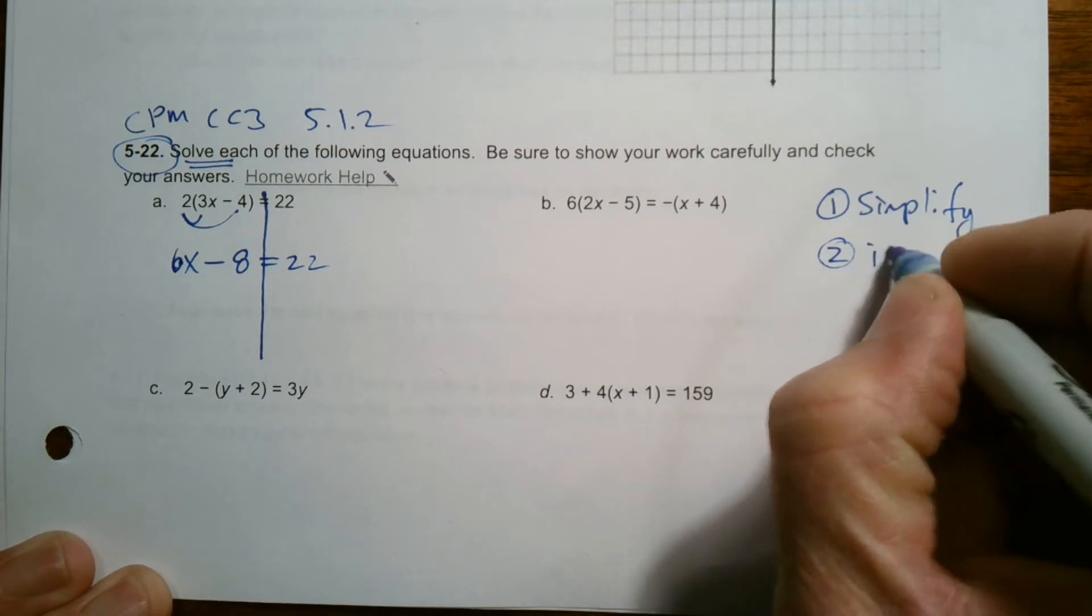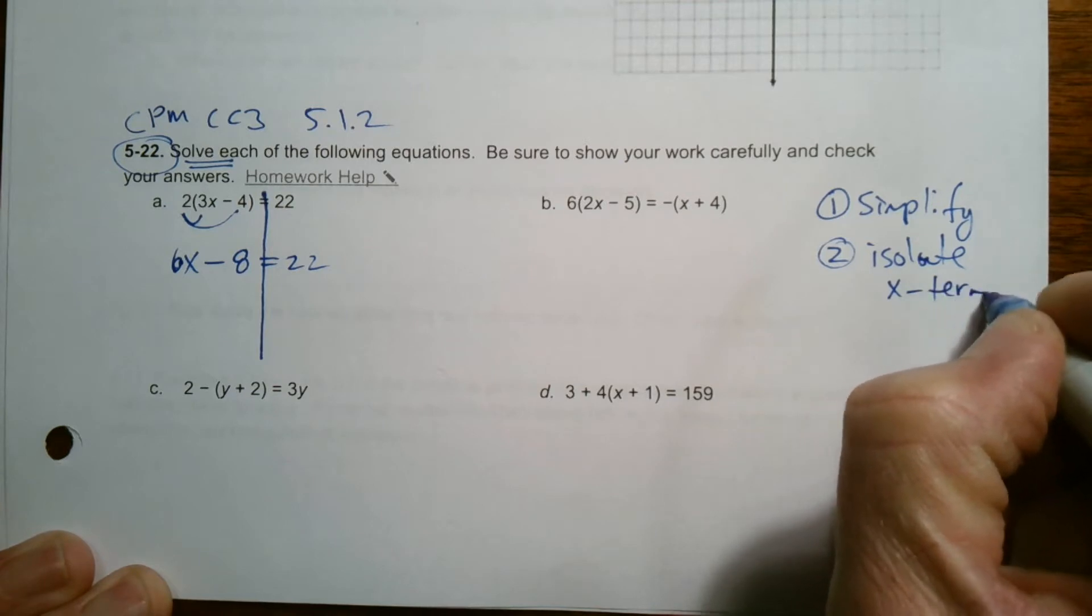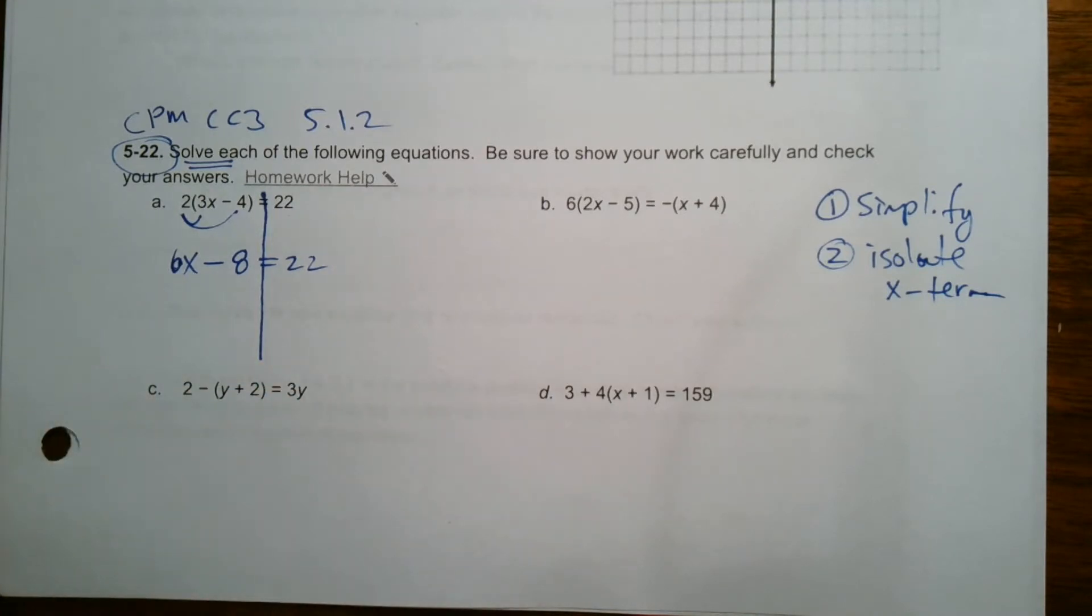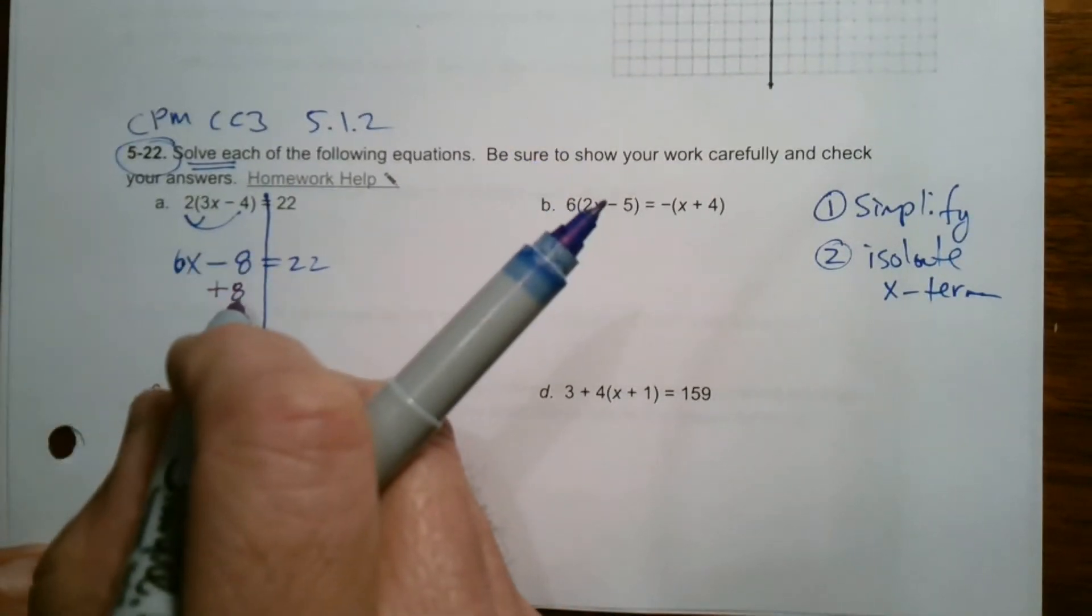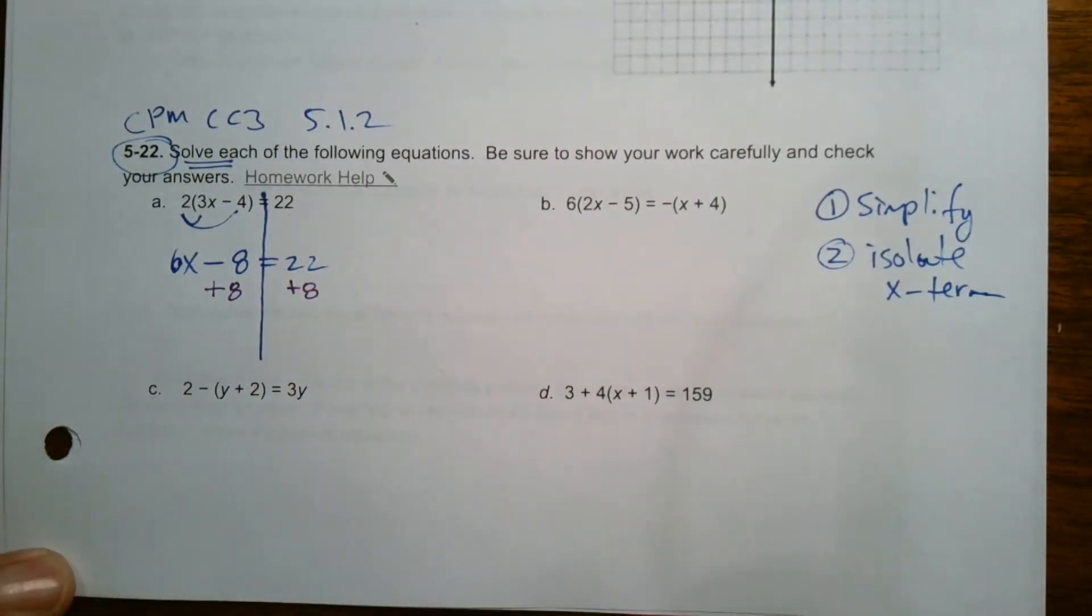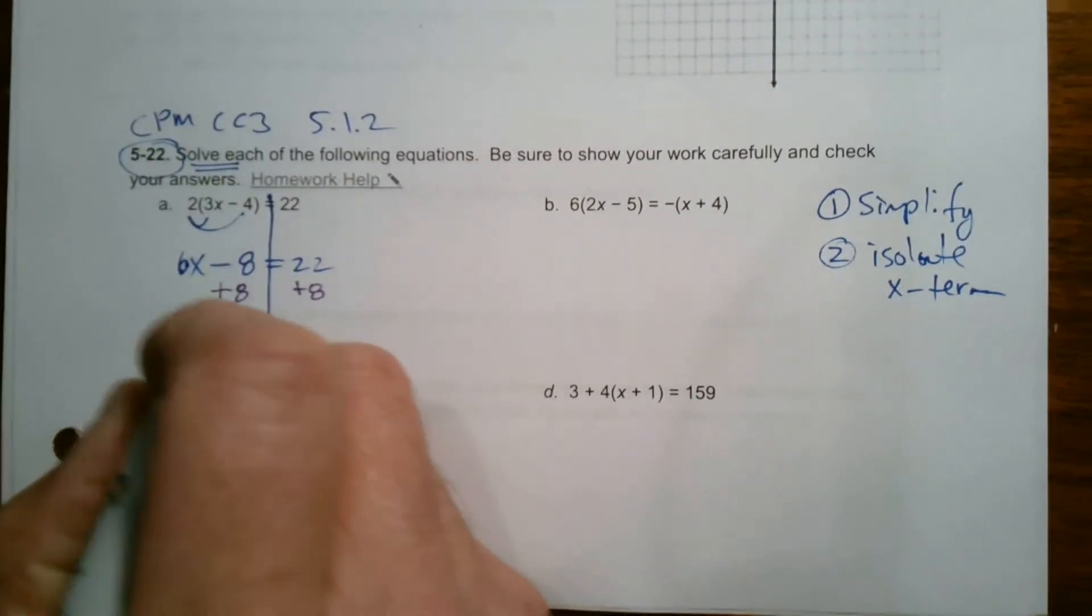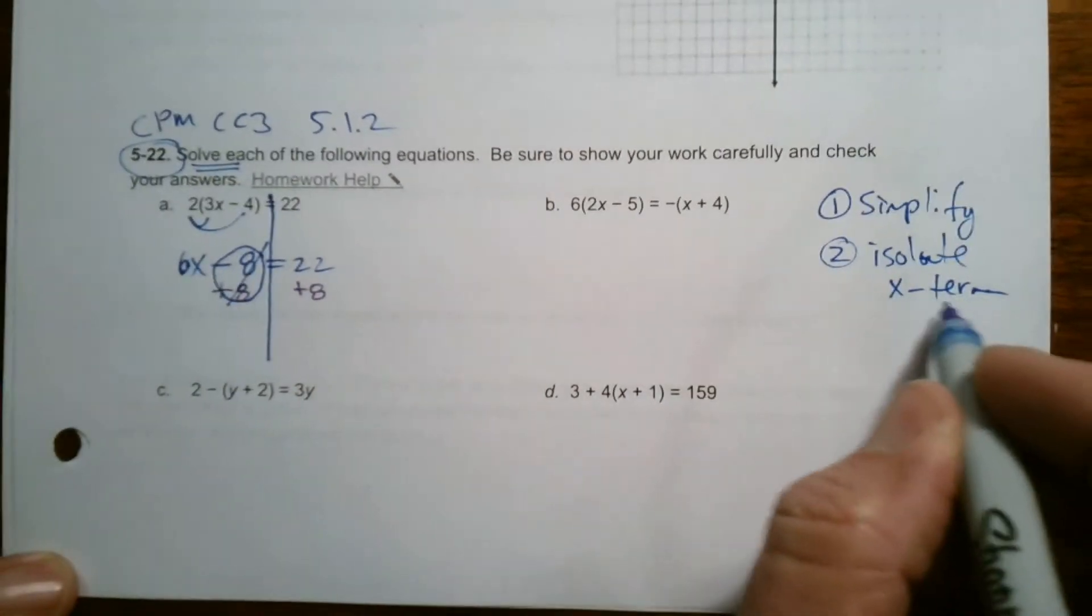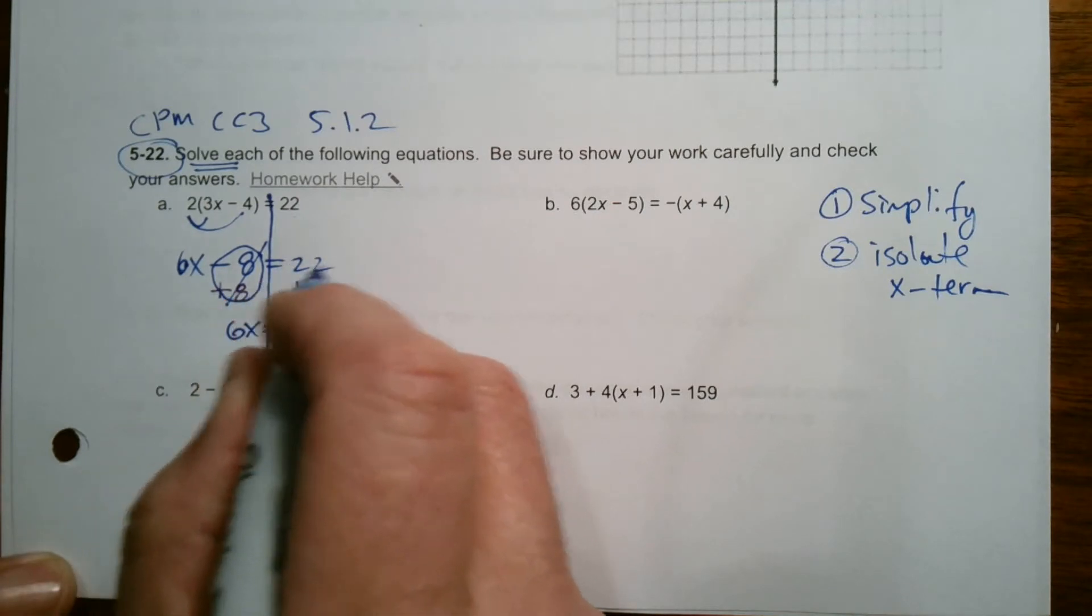My second step is to isolate. Isolate means get alone the X term, the term that has the X. And in this case there's only one term with X, so I just got to get that alone. So that means I need to get rid of this minus eight. To do that you use inverse operations. So I'm going to add eight. Opposite of it is add eight. So to both sides, and what you do to one side of an equation you always do to the other. So that's why I put this line there, so I want to show that I'm balancing what I'm doing. So now I added eight so this would go away. I'm trying to cancel that out to isolate my X term. So I get six X. So the X term is isolated equals over here I can combine those and I get 30.